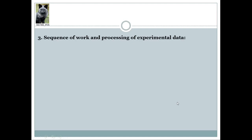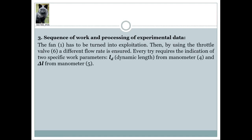Let's move on and discuss the sequence of work, data collection, and data processing. The fan must be turned into operation. Then, by using the throttle valve, different flow rates are established. Every measurement requires the indication of two work parameters: LD, the dynamic length measured by manometer 4, and ΔL measured by manometer 5.